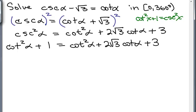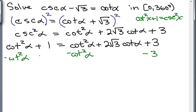We're going to get everything on one side of the equation. Notice there's a cotangent squared alpha on each side, so if you subtract cotangent squared alpha from both sides, you'll only have a cotangent alpha — not squared — in your problem. So let's subtract cotangent squared alpha from both sides and subtract 3 from both sides.